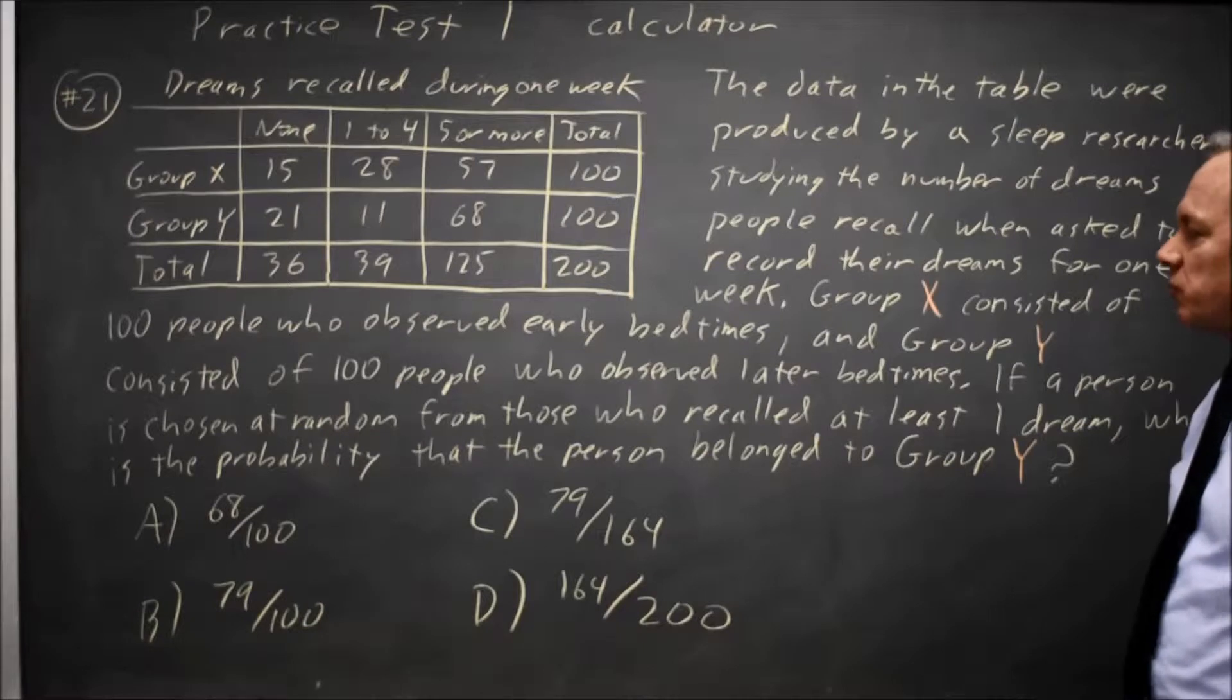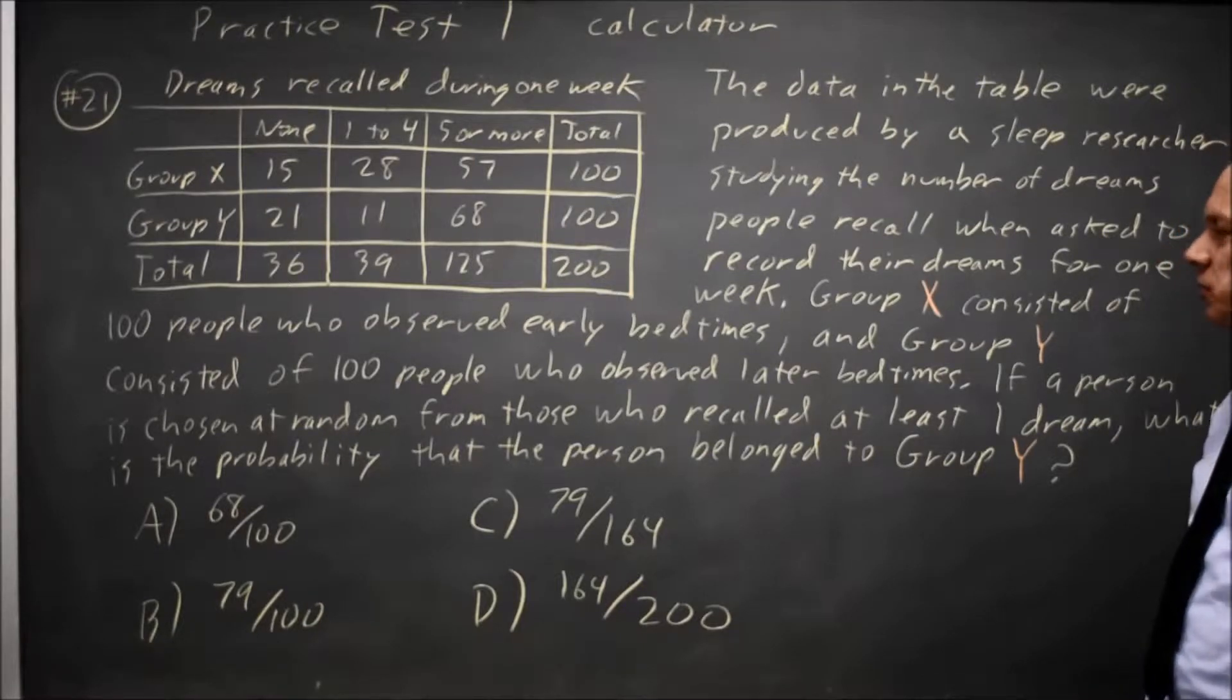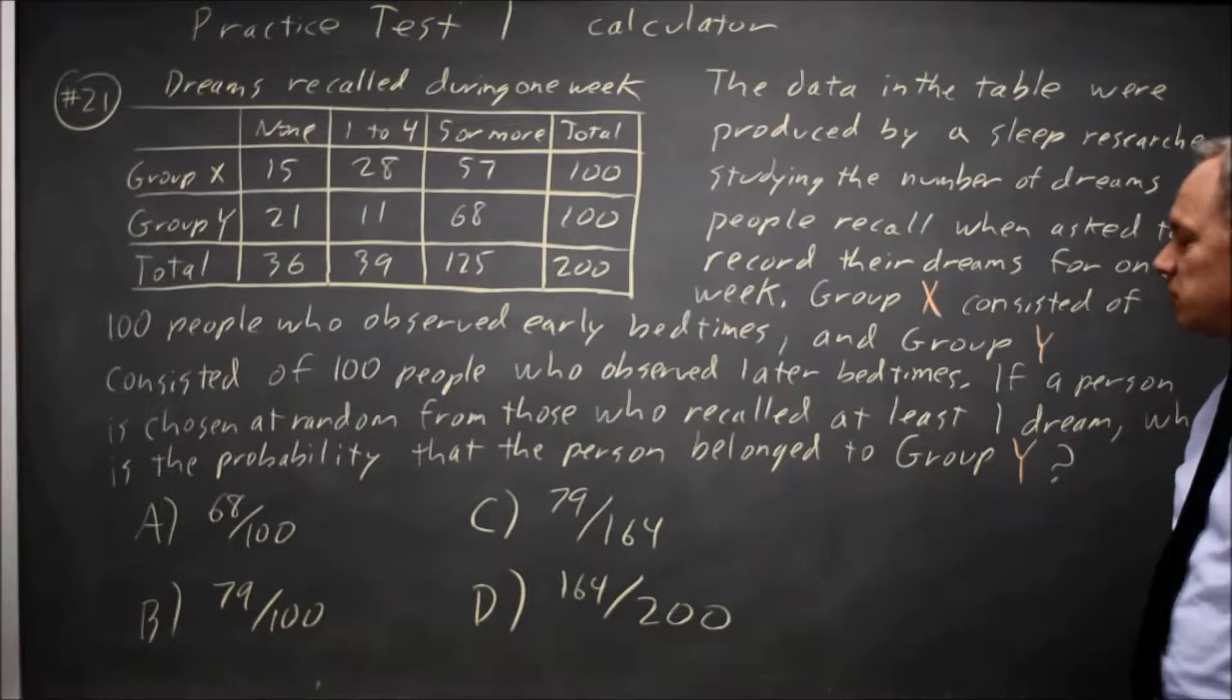If a person is chosen at random from those who recalled at least one dream, what is the probability that the person belonged to Group Y?